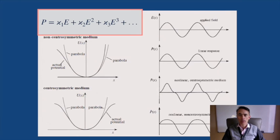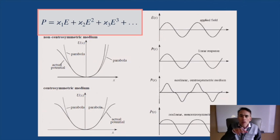If the electric field is of low intensity, the electrons will be at the bottom, and the oscillation will be symmetric, giving us linear optics phenomena.